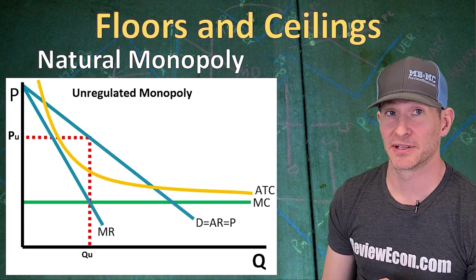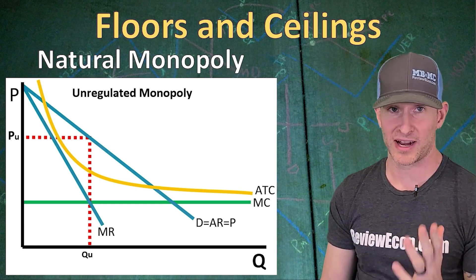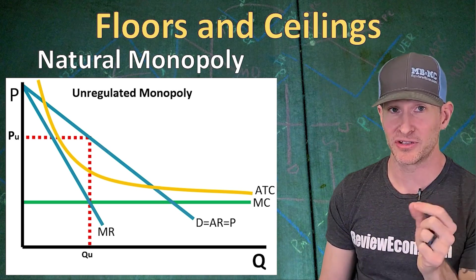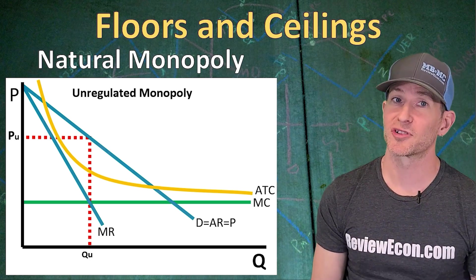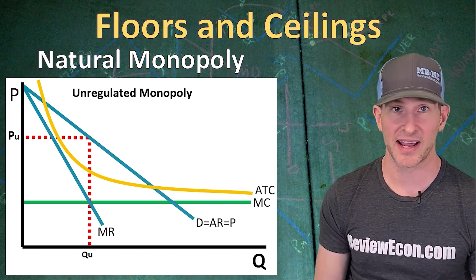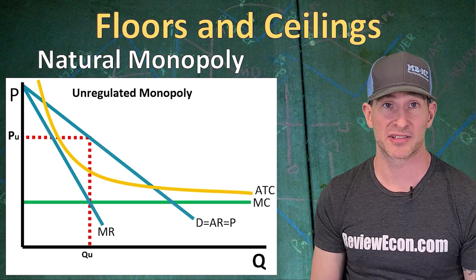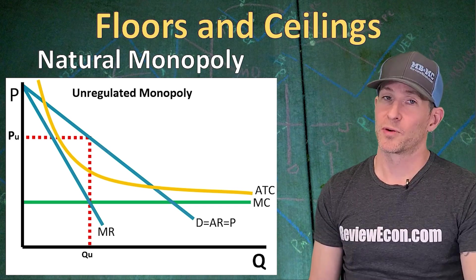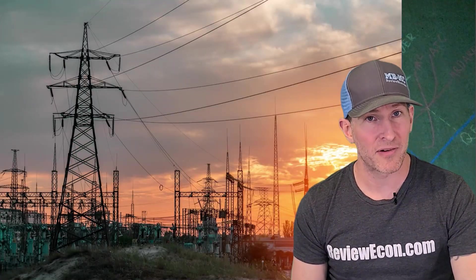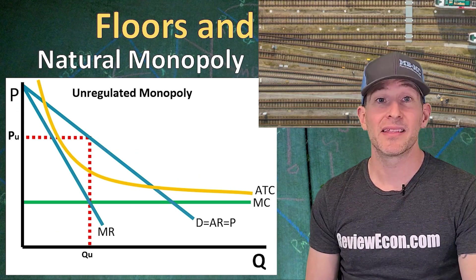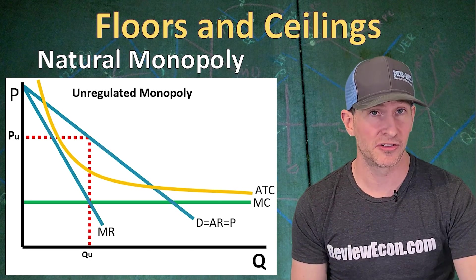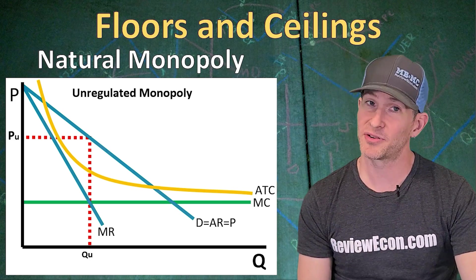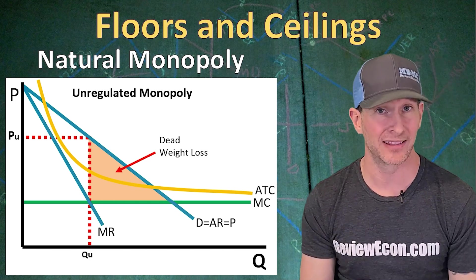Next, let's talk about natural monopolies. A natural monopoly is a case where a government intervention of a price ceiling could actually reduce deadweight loss and improve efficiency. Here we have an unregulated natural monopoly. Remember, a natural monopoly always captures economies of scale and has a constantly downward sloping average total cost curve through the relevant range. Real world examples include the local power company that provides electricity to your home and the infrastructure from our railroads. If this natural monopoly is unregulated, we are going to see a low quantity of QU and a high price of PU, giving us a massive triangle of deadweight loss.